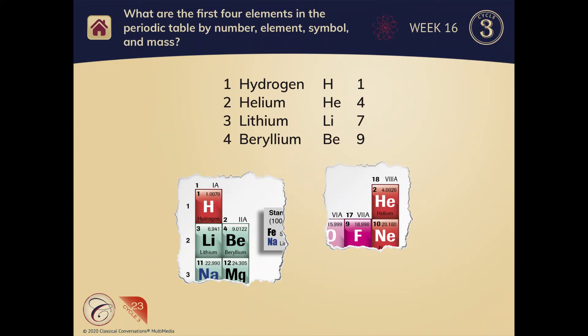What are the first four elements in the periodic table by number, element, symbol, and mass?